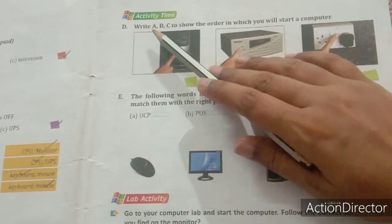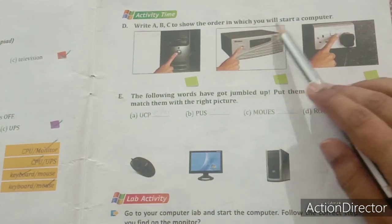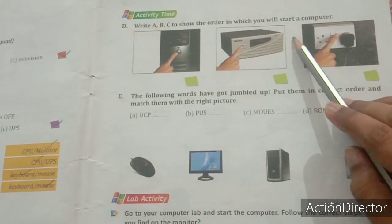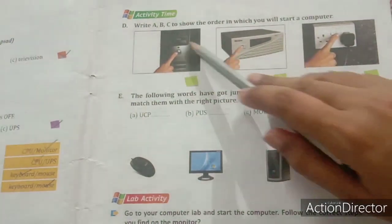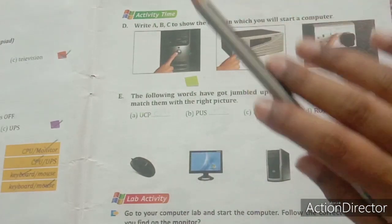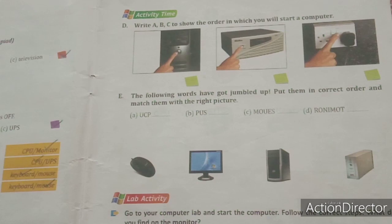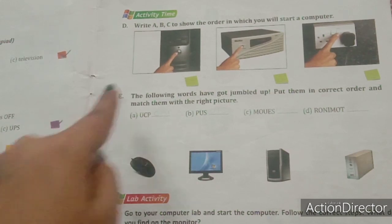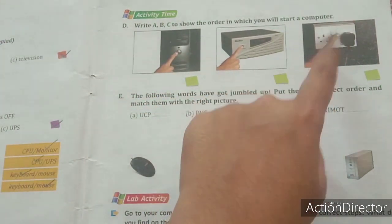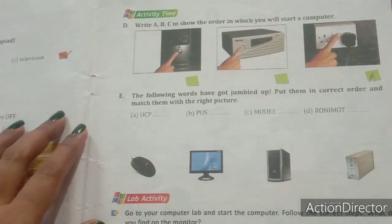The question is: write A, B, C to show the order in which you will start a computer. That means you have to mark A for the first step, B for the second step, and C for the third step. I have taught you how to switch on a computer. What is the first step? Switch on the main power supply. Which one is the main power supply here? Option 3. So write A in that box.